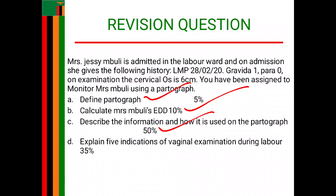We'll start with the maternal part. On the maternal part, the first thing there is the social biographic data. On the social biographic data, there is name — you will ask the name of the patient or client for identification purposes. Then apart from that, the next parameter is age, where you say I will ask how old the client is in order to rule out risk factors associated with being below 18 years or above 35 years.